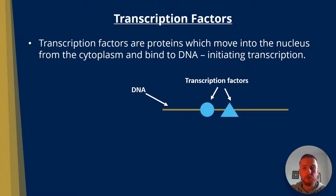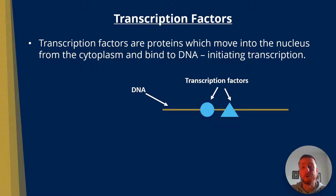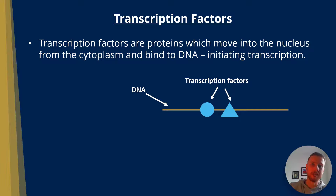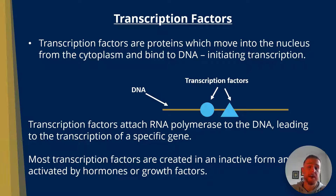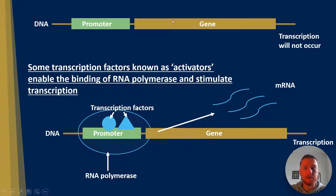So transcription factors first of all. Transcription factors are proteins which move from the cytoplasm into the nucleus and bind to DNA. They initiate transcription, which means they cause the formation of mRNA from DNA. Transcription factors attach RNA polymerase to the DNA, leading to the transcription of a specific gene. Most transcription factors are created in an inactive form and activated via the action of hormones or growth factors. Here we have DNA represented at the top with a region called the promoter, followed by a sequence of bases which is our gene. In this example, transcription will not occur.